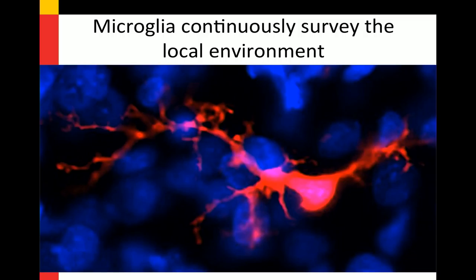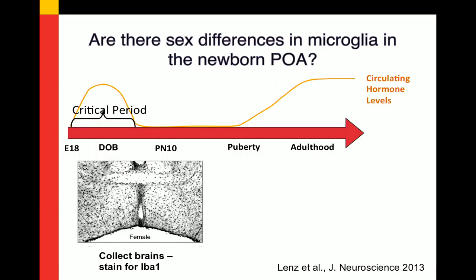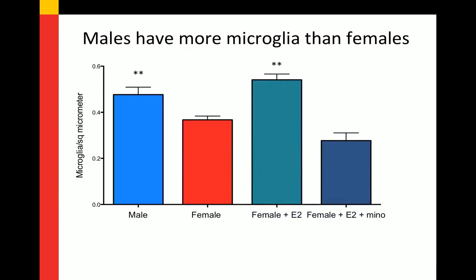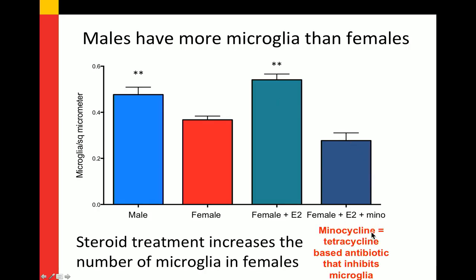Katie Lenz in the lab asked a simple question: is there a sex difference in microglia in the newborn preoptic area? She stained with IBA1, a microglia-specific marker, and counted density in the medial preoptic area. She found that males had significantly more microglia per unit area than females. If females were treated two days prior with a masculinizing dose of estradiol, they came right up to the male level. And if treated with minocycline — a tetracycline-based antibiotic that at low doses relatively specifically calms microglia — it blocked the effects of estradiol and kept the female at the female level, blocking masculinization of the microglia.